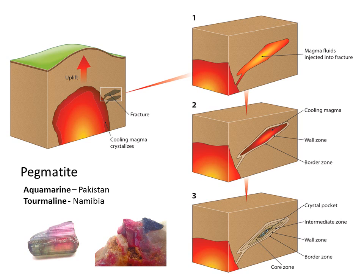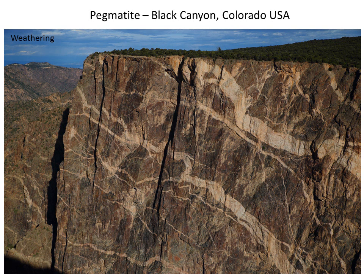Here's an example of what a pegmatite might look like — this is a very famous example at Black Canyon, Colorado. Because pegmatite minerals are largely quartz, feldspar, and mica, they stand out clearly against the surrounding host rock on either side. These large veins are pegmatites, and if you see something like this on the side of a hill, it could very well be a pegmatite.